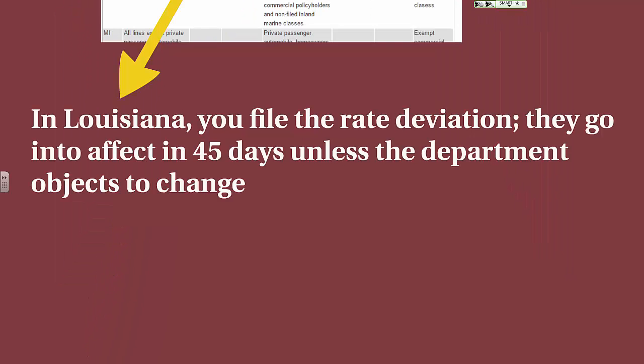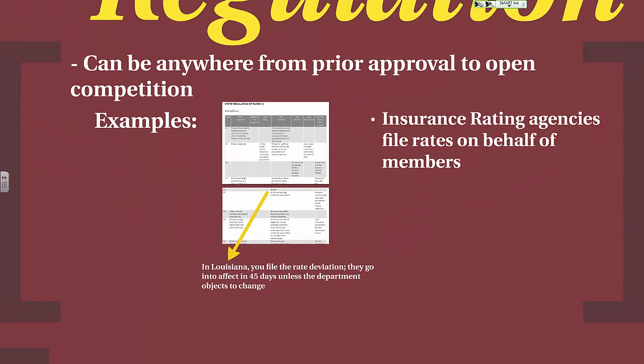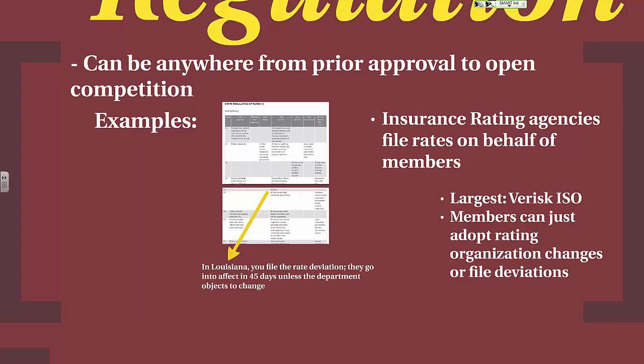Keep in mind that even when rate regulation is open competition, rates aren't unregulated — in admitted markets, the state insurance department always has the ability to deny rate changes and can require an insurer to refund issued rate changes if the department determines the change was too high and not actuarially justified. In Louisiana, rate regulation is file and use for all lines — you file the rate deviation and those deviations go into effect in 45 days unless the department objects. It's also important to note that insurance rating agencies like Verisk ISO file rates on behalf of members. Members can just adopt rating organization changes or file deviations. Not all insurance companies are members of ISO — in particular, the larger companies tend not to use ISO rate changes.